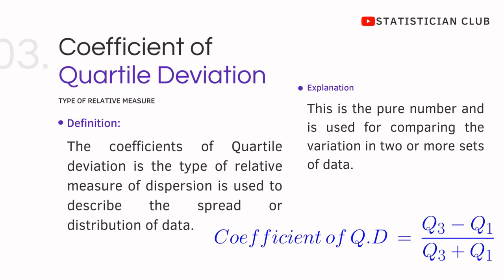Here is the definition: coefficient of quartile deviation is the type of relative measure.